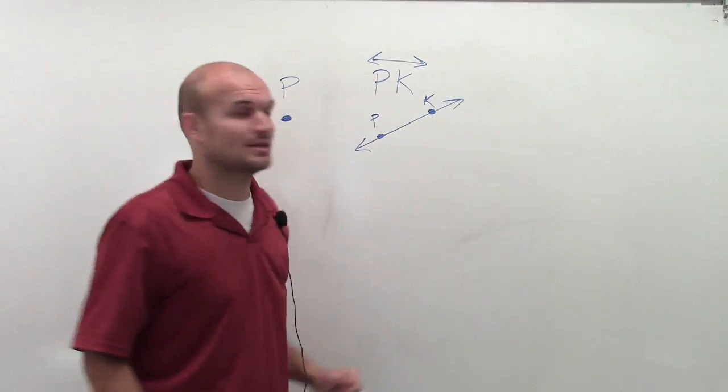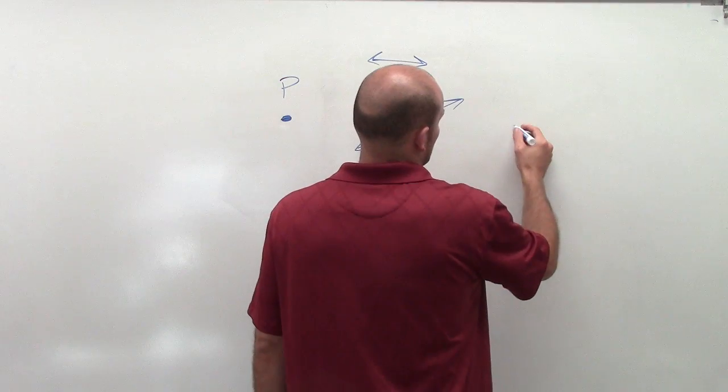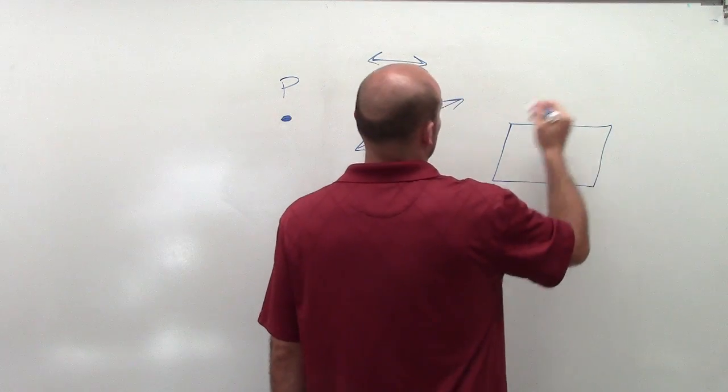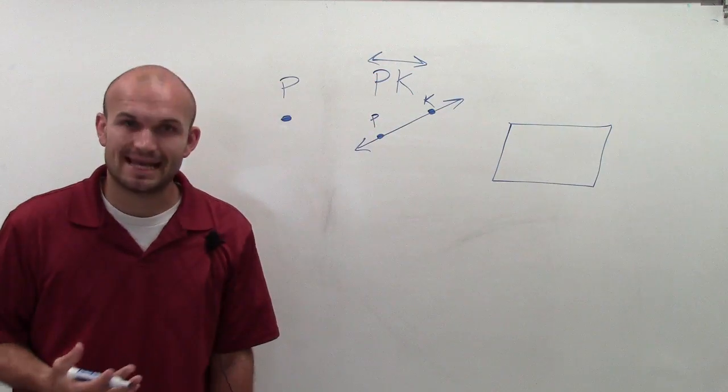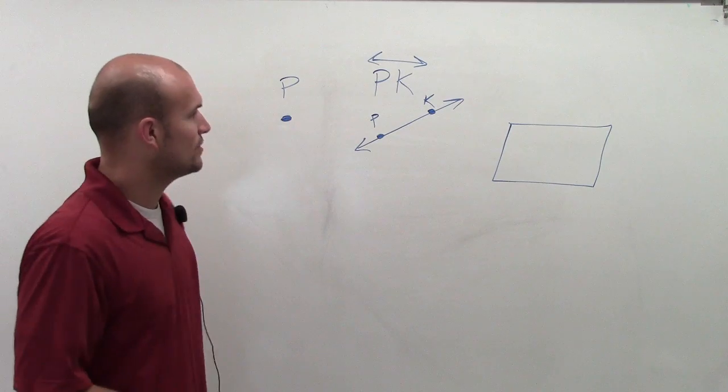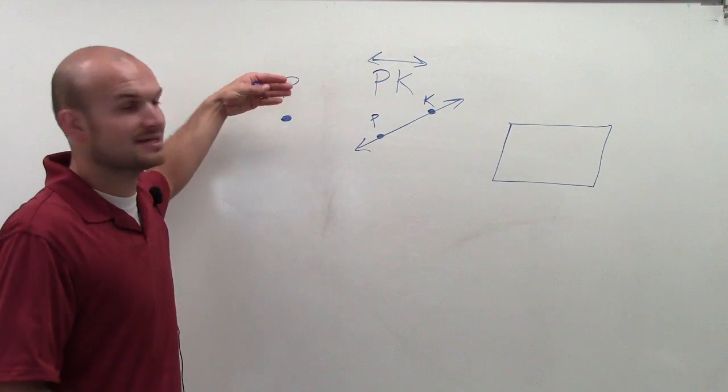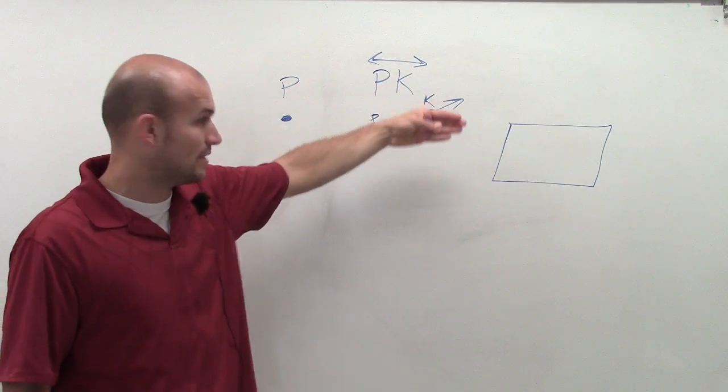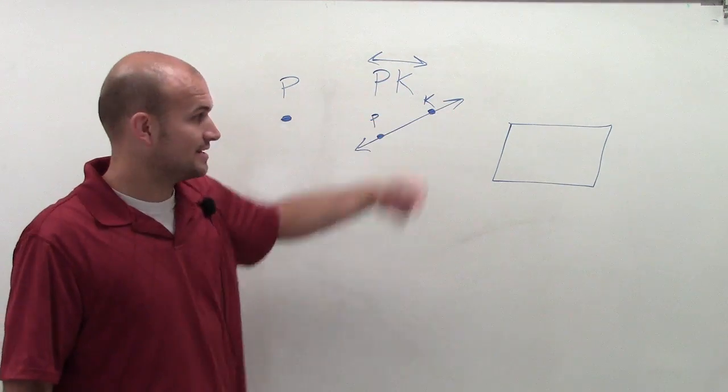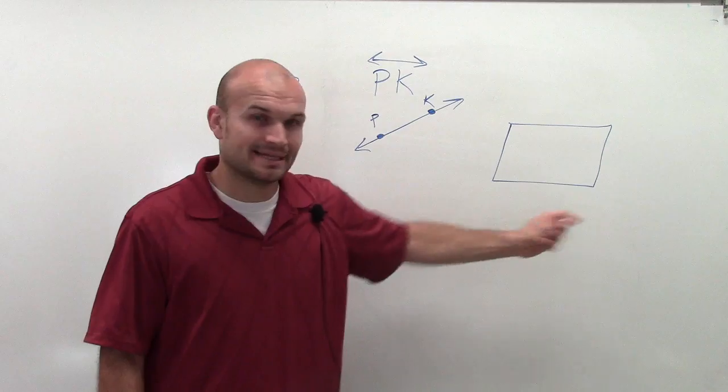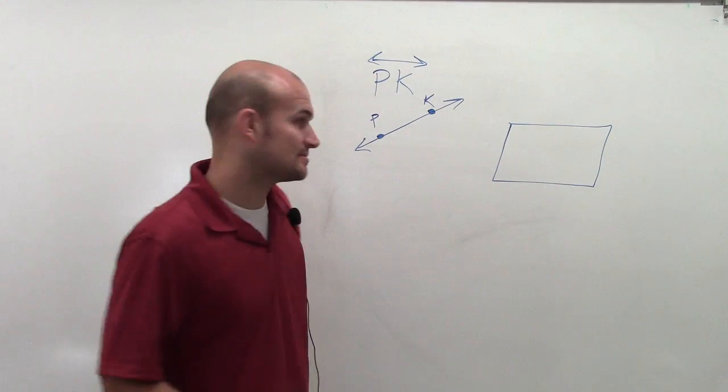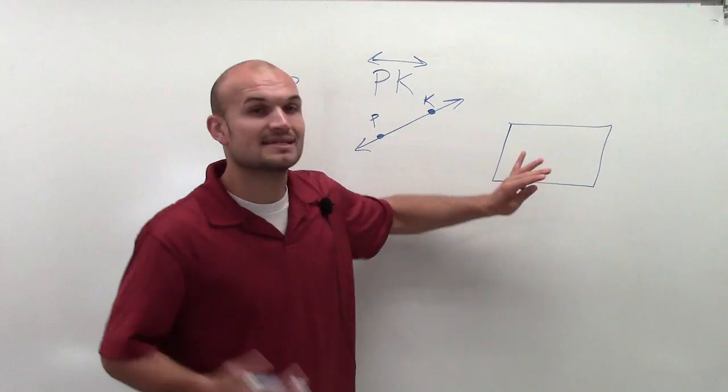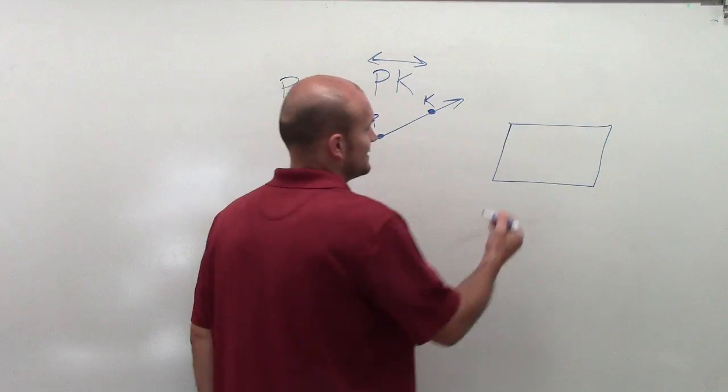So then, now we're going to get to our last portion, which we're going to call a plane. And it's important for us to understand, here's a point. It has no size. A line contains infinitely many points, but again, has no thickness. And then a plane is a flat surface that goes on infinitely that is contained of infinitely many lines.